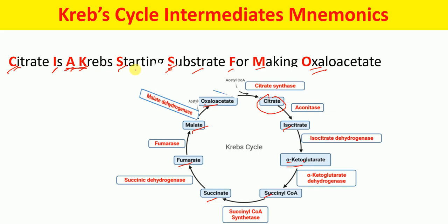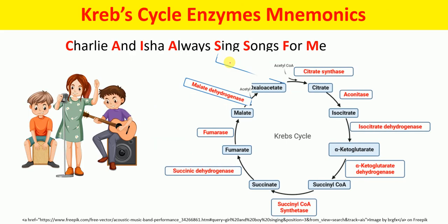So the mnemonic for remembering Krebs cycle intermediates is 'Citrate Is A Krebs Starting Substrate For Making Oxaloacetate.' Now the mnemonic to remember the enzymes involved in the citric acid cycle is: 'Charlie And Isha Always Sing Songs For Me.' This is Charlie, this is Isha, and this here is me.